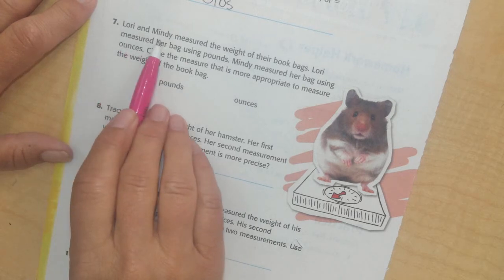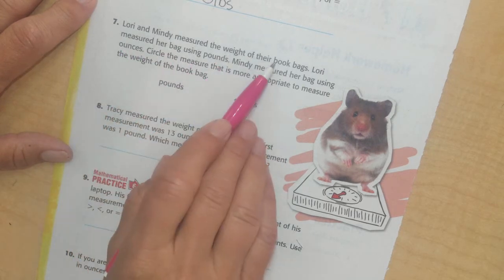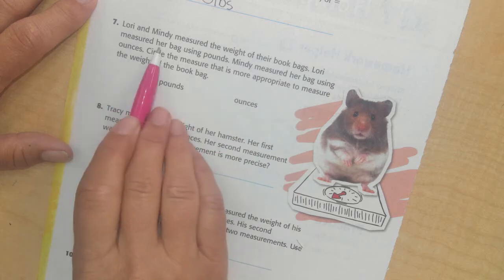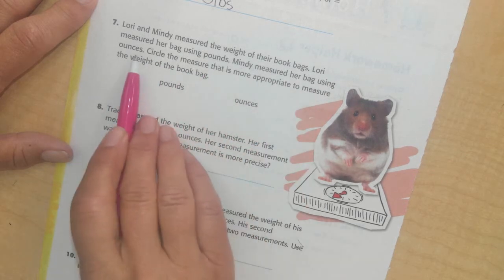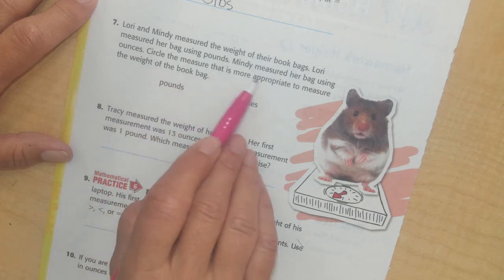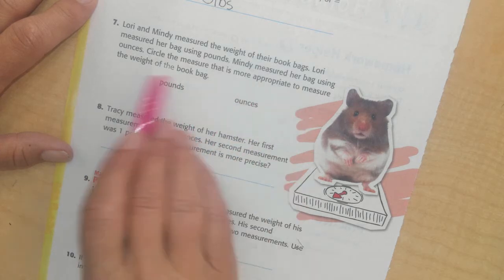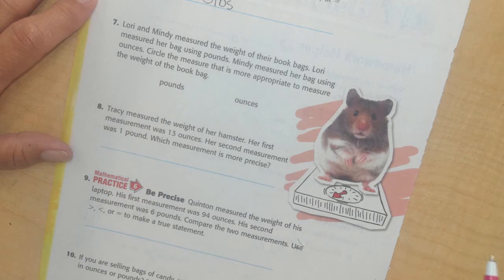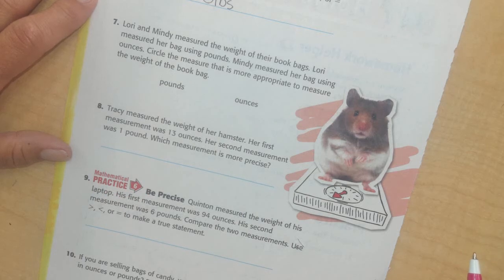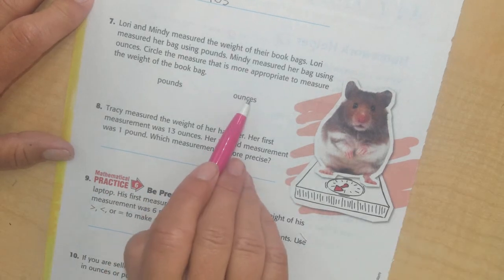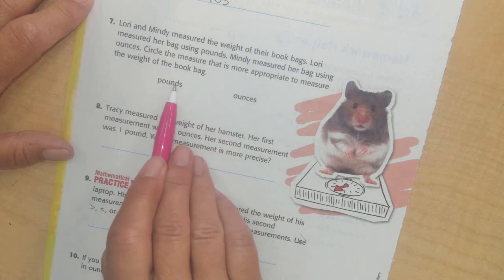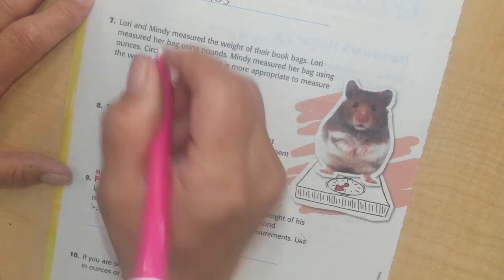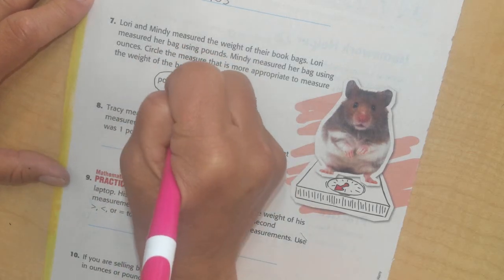Okay, Lori and Mindy measured the weight of their book bags. Lori measured her bag using pounds, Mindy measured her bag using ounces. Circle the measure that is more appropriate to measure the weight of a book bag. Alright, book bags are kind of heavy. Usually I use ounces to measure stuff when they're lighter, and I use pounds to measure when they're heavier. And I don't know, I've picked up you guys' book bags, so I would probably use pounds to measure a book bag.